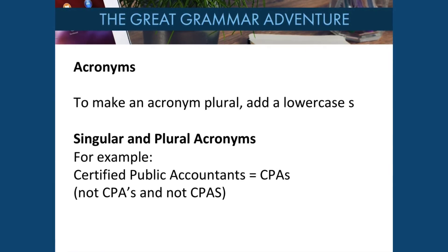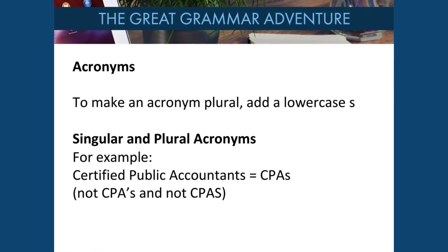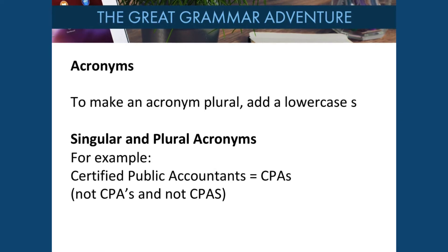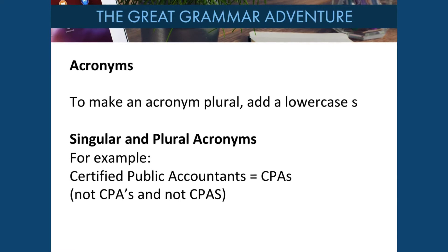To make an acronym plural, add a lowercase s. For example, certified public accountants — CPA — the C, P, and A are uppercase and the S is lowercase. Remember, do not put an apostrophe S and do not use an uppercase S at the end of the acronym.